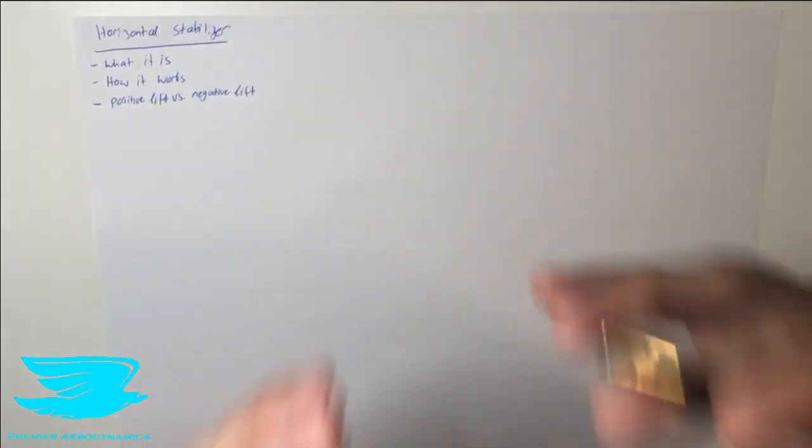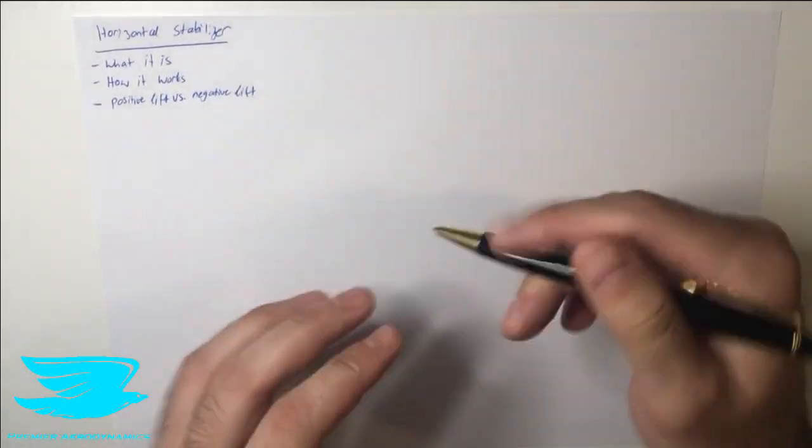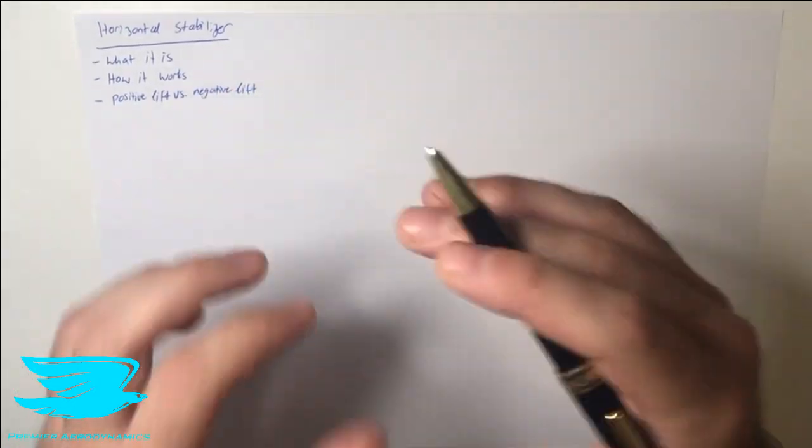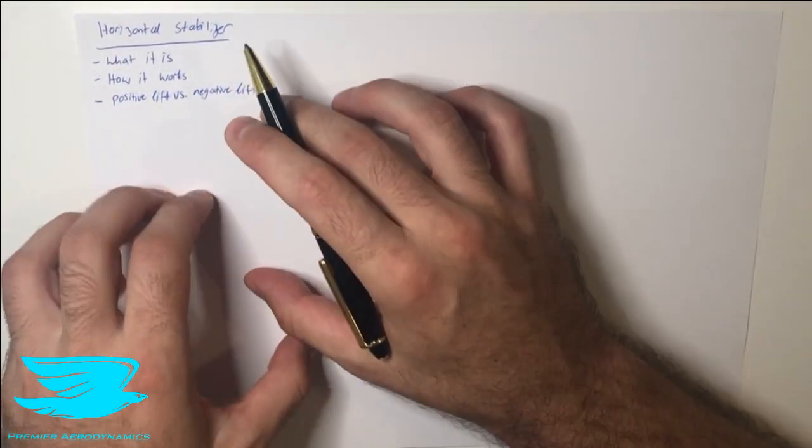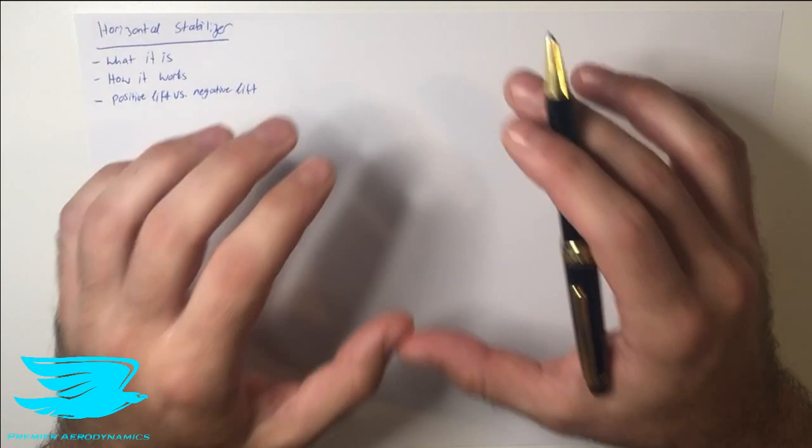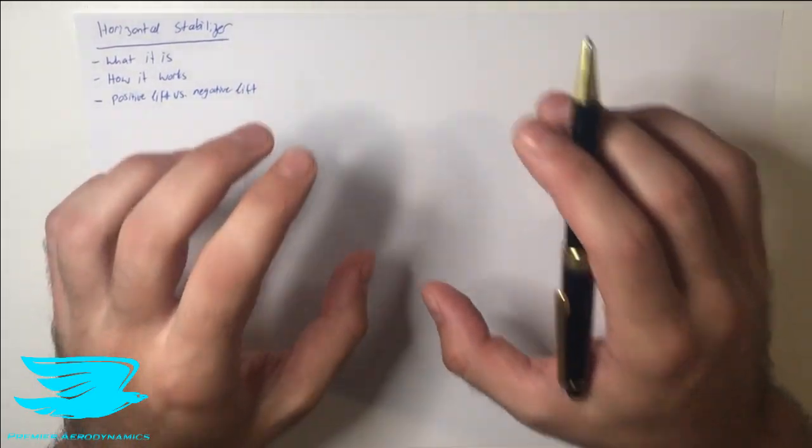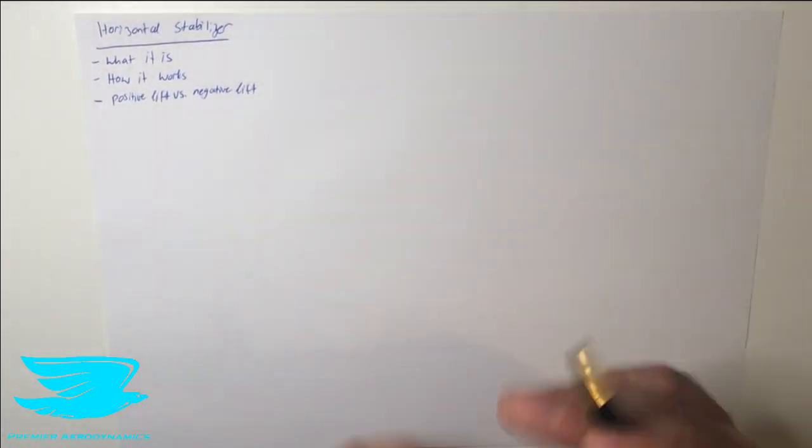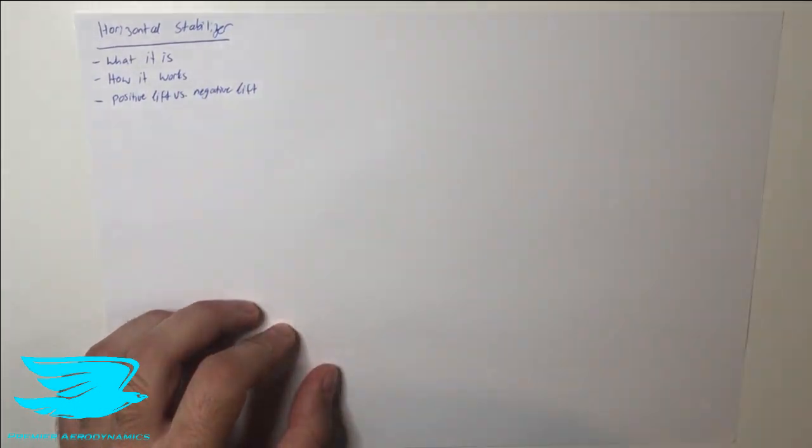So we're going through what is a horizontal stabilizer, how it works, and this last point, positive lift versus negative lift. This is quite an interesting point because horizontal stabilizers don't really work exactly sometimes as you might think. They're quite complicated and we'll go through in this last point why that is.